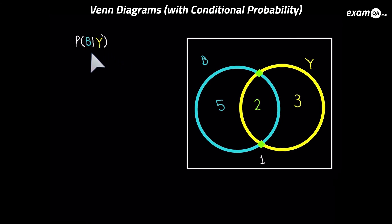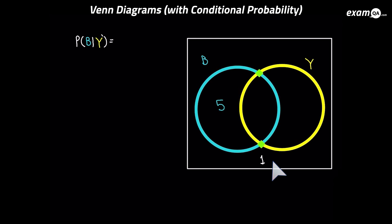Let's try this one — it's slightly trickier. It says P(B | not Y): the probability of B given not Y. So if we're given not Y, let's only look at not Y — which is this region and this region. Everything else is gone. Now let's work out the probability of B: B is just the 5 over the total, which is 6. And there we have it.